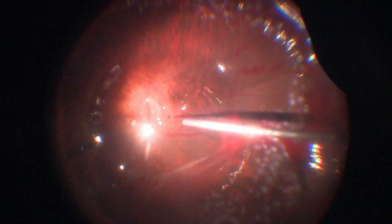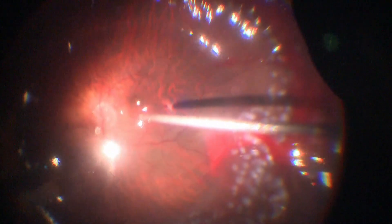Intraocular pressure is immediately raised and PFCL is re-injected to push the fluid and blood away from the posterior pole. The bleed is aspirated with the help of cutter.